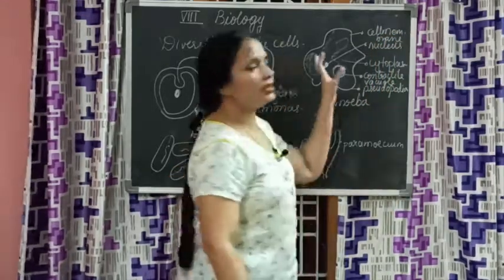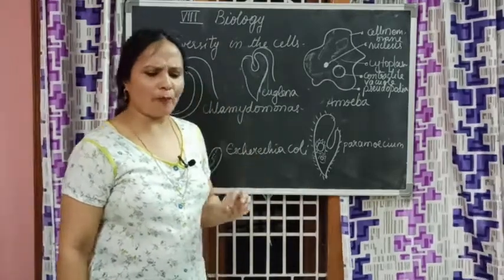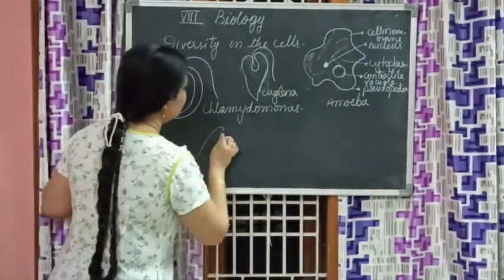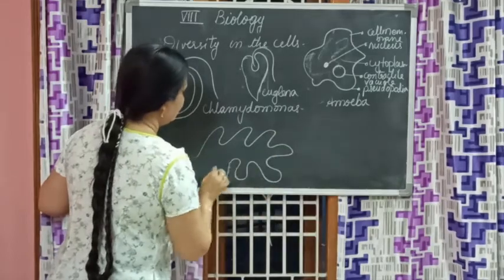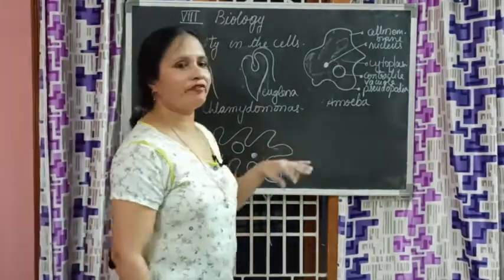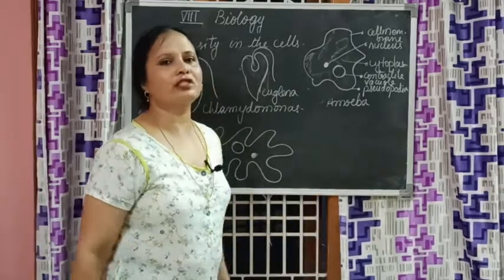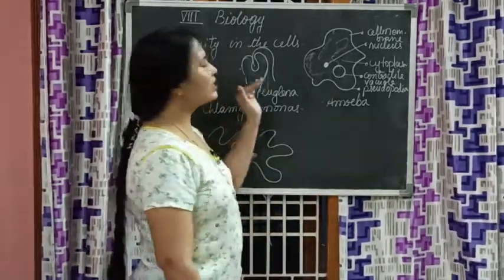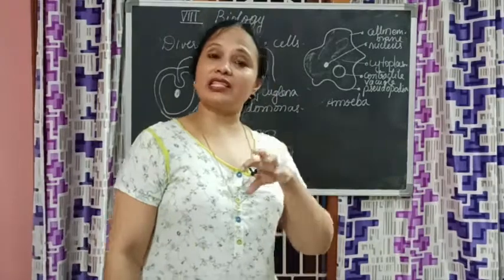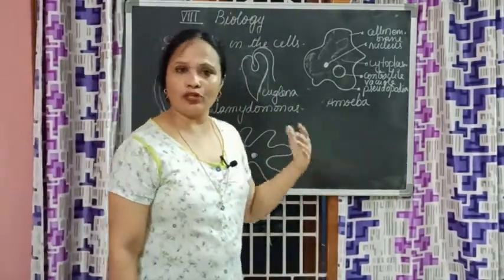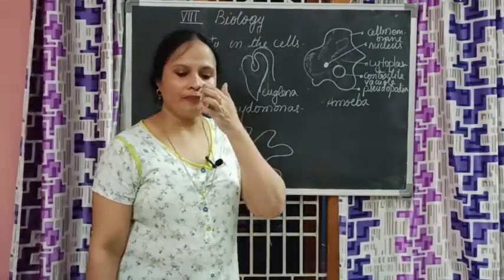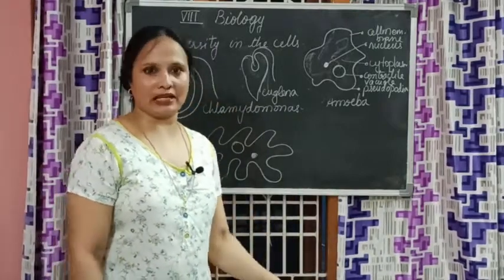This is an amoeba. Whether you draw a simple version or a complicated beautiful structure, however you draw it and call it amoeba, nobody can say no - they have to accept. So this is the diversity in cells. Tomorrow we are going to learn about observing cells in a leaf - how cells appear in plants.